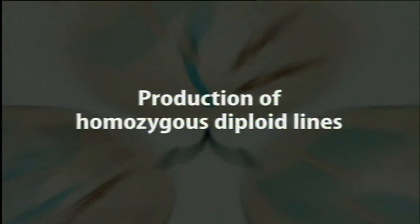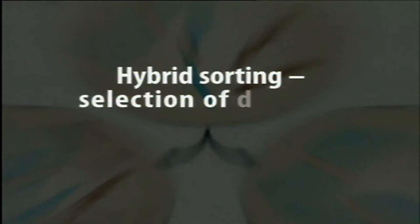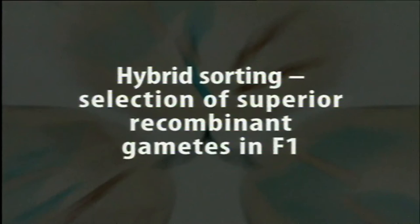One of the most important applications of haploids is the production of homozygous diploid lines, also called pure lines. In conventional plant breeding, it takes 10 to 12 years to develop a pure line — a completely homozygous plant. But when haploids are converted into diploids by colchicine treatment, they become completely homozygous. Haploids are also used for a technique known as hybrid sorting.